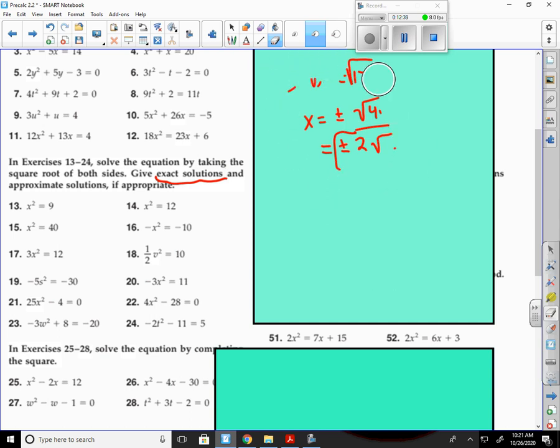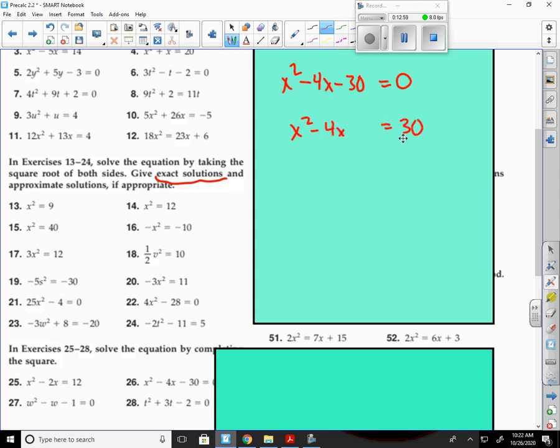Okay, let's jump down to 26 and complete the square. I have x squared minus 4x minus 30 equals 0. First thing I do is get this over to the other side. x squared minus 4x equals 30. That's negative b over 2a, or just negative b over 2. So that's negative of a negative 4, that's over 2, and then we square it. So that gives us 4.